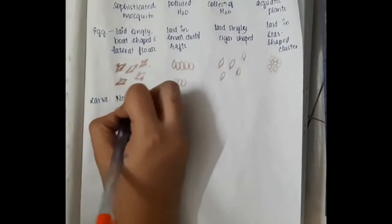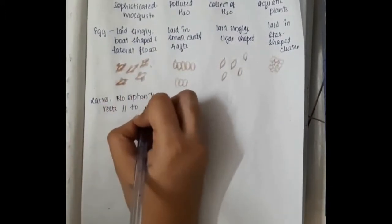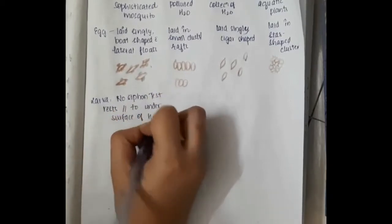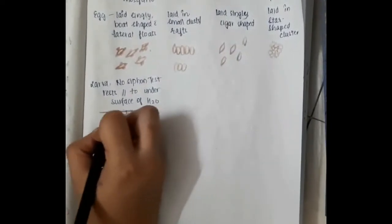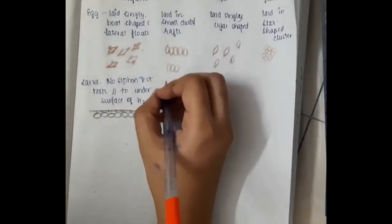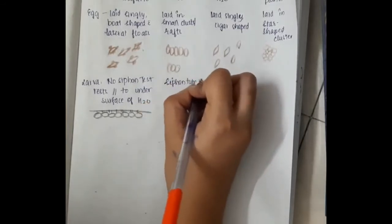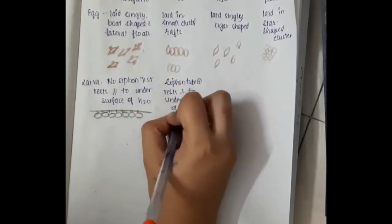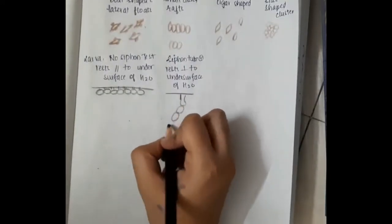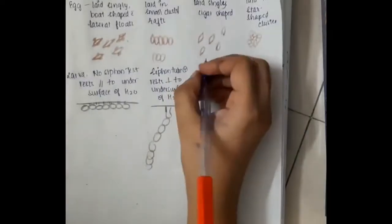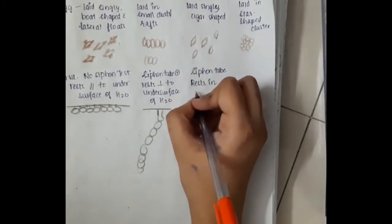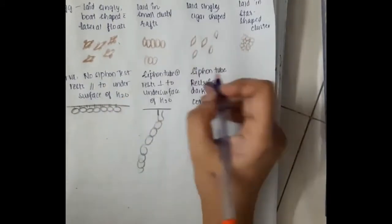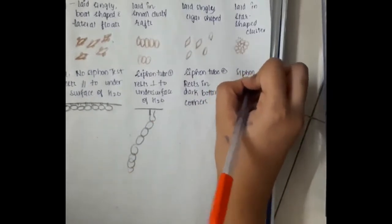Looking at the larva: in Anopheles mosquito, the larva has no siphon tube and rests parallel to the surface of water. In Culex mosquito, the larva has a siphon tube and it rests perpendicular to the under surface of water. In Aedes mosquito, the siphon tube is present and it rests in dark button corners — it is almost similar to Culex mosquito.